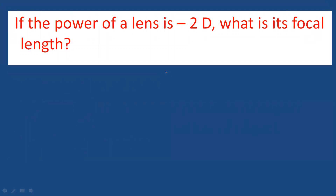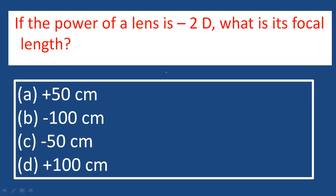If the power of a lens is minus 2 diopters, what is its focal length? Using the relation P = 1/f, the focal length f = 1/P = 1/(−2) = −0.5 meters, which equals −50 centimeters. The negative sign indicates it is a diverging lens. Option C, minus 50 cm, is the correct answer.